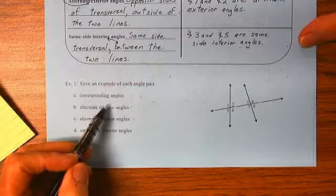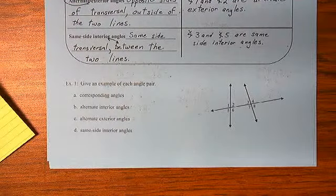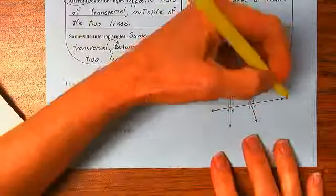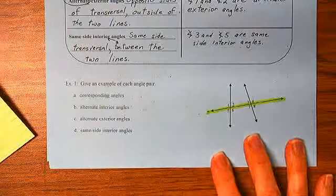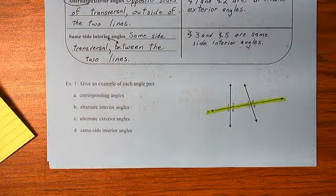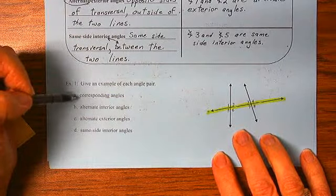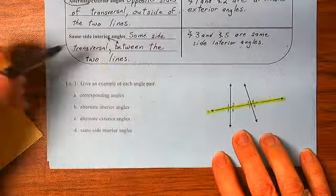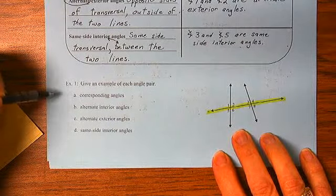Examples of corresponding angles. First, let's just identify our transversal. That always makes things easier. There is my transversal. Corresponding angles are on the same side of the transversal and they're in the same position.